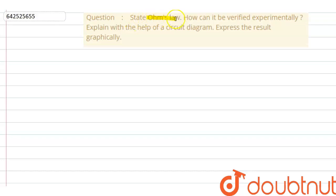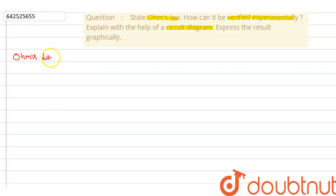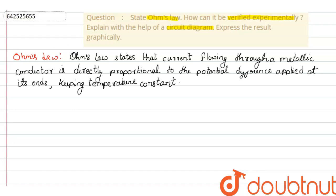The question says: state Ohm's law, then how can it be verified experimentally — explained with the help of a circuit diagram — and express the result graphically.